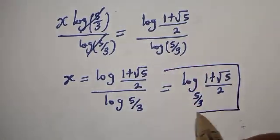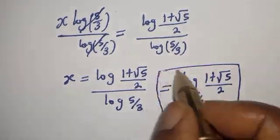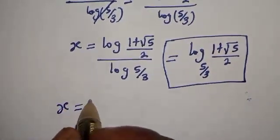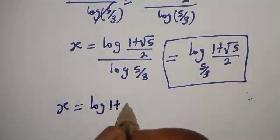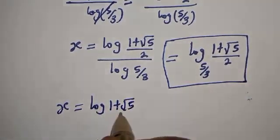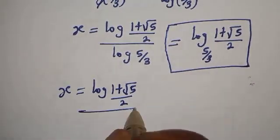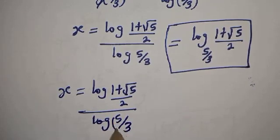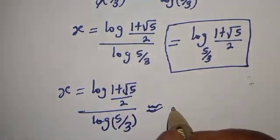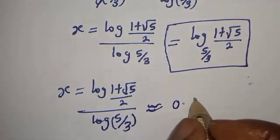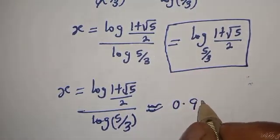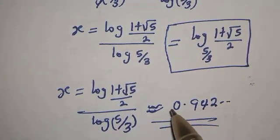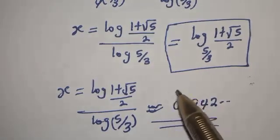So this is the final answer. And if you press your calculator, s is equal to log of 1 plus root 5 over 2, divided by log of 5 over 3, which is approximately 0.942. Thank you for watching. Don't forget to like, share, comment and subscribe to my channel. Bye bye.